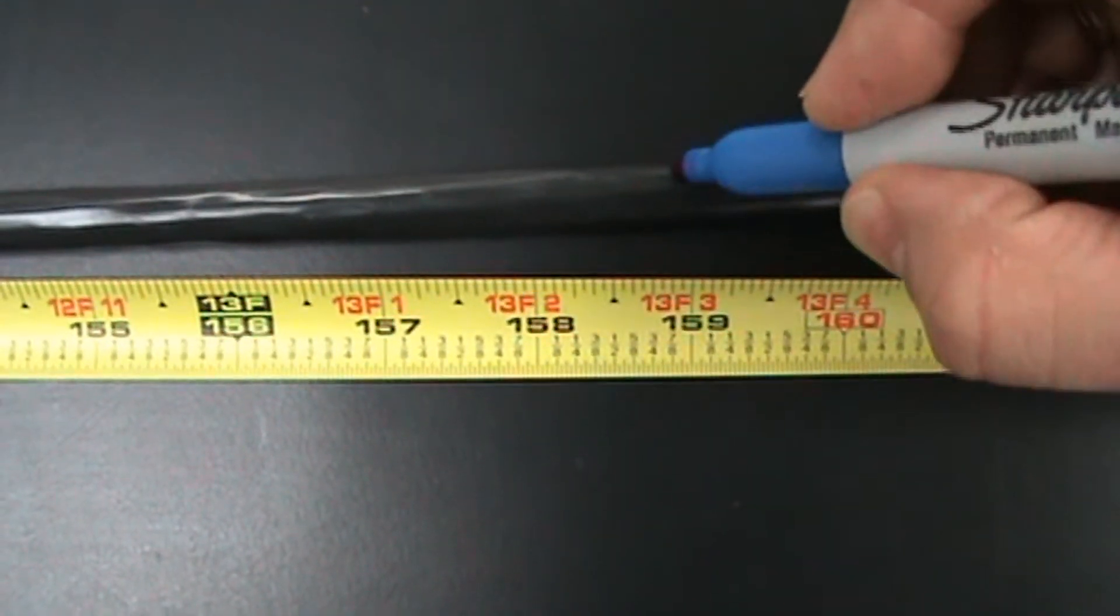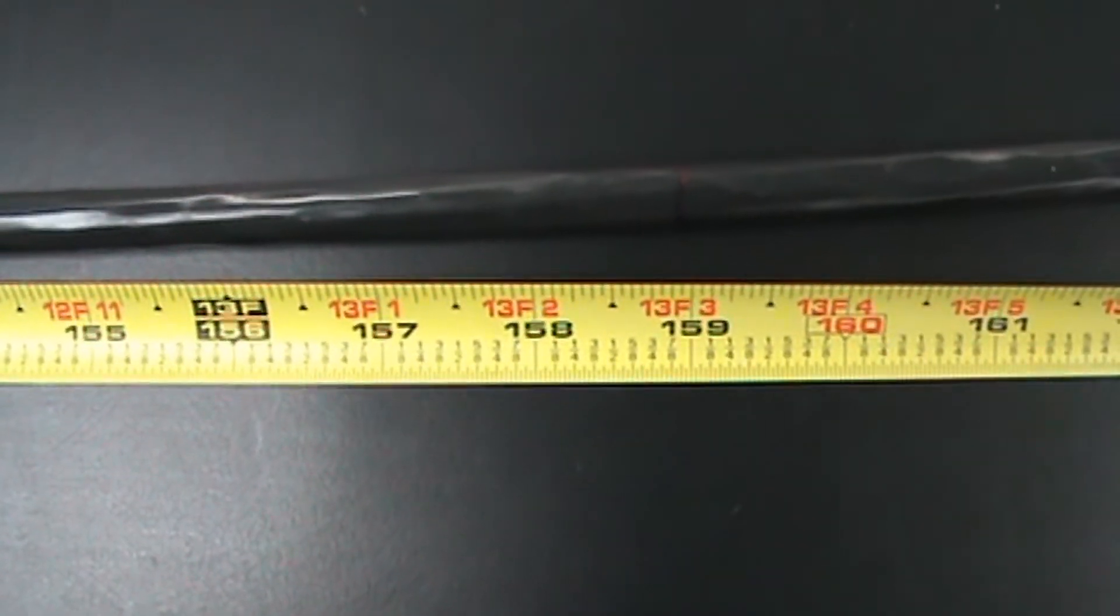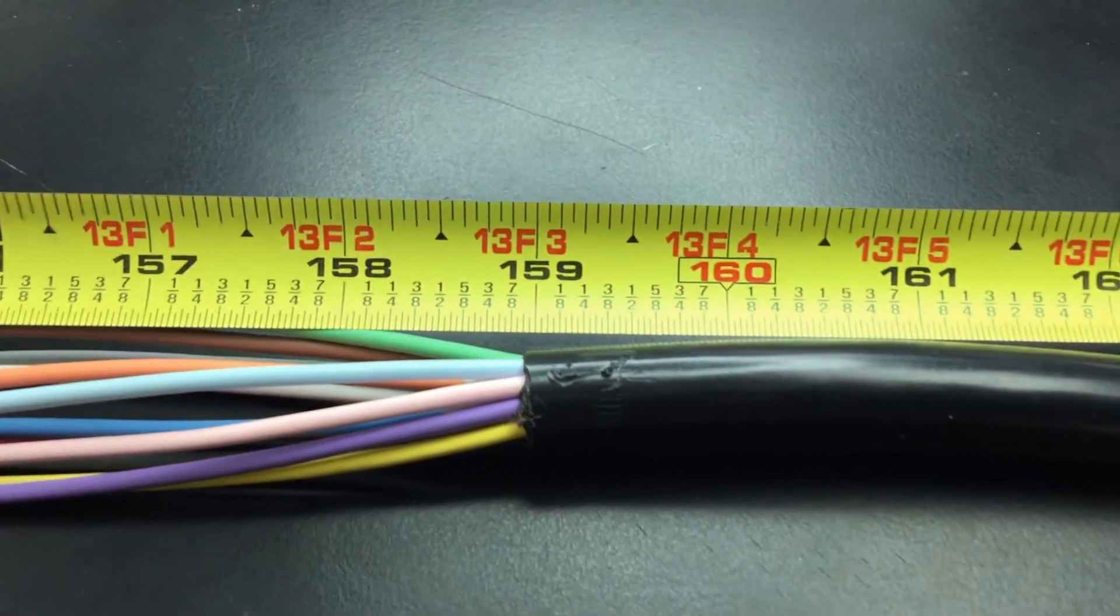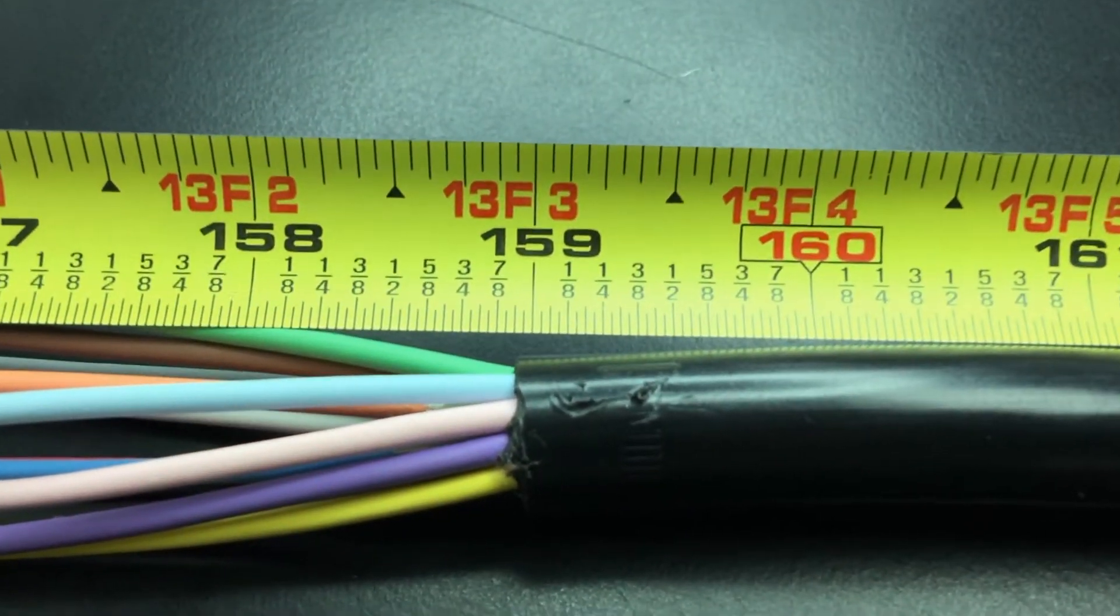Measure and mark 159 inches on your network cable. Then, remove the cable jacket and all the strength members, leaving just the buffer tubes.